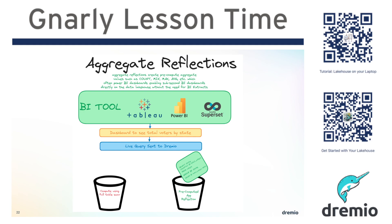With aggregate reflections, we eliminate a lot of this friction. You are materializing pre-computed aggregates, but you're doing it as an Iceberg table, so you get the benefits of all the Iceberg metadata. That helps pre-compute some of those aggregates, and Dremio will handle the refreshing logic to keep it in sync.